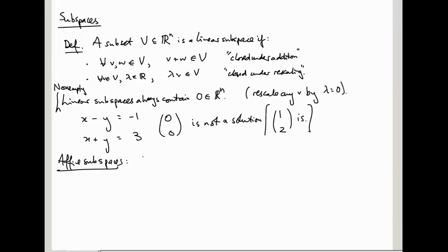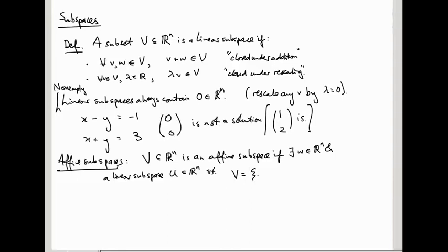So, V in R^n is called an affine subspace if there exists a vector W in R^n and a linear subspace, running out of letters, U inside R^n, such that V is the set of points of the form W plus U, where U runs over all the elements of capital U. So you should think of this, what is this funny thing in the brackets here, I'm going to write it as W plus capital U.